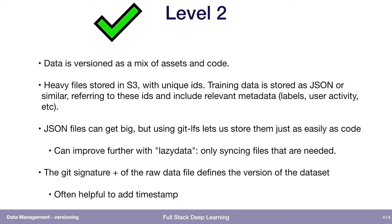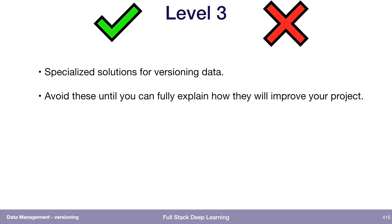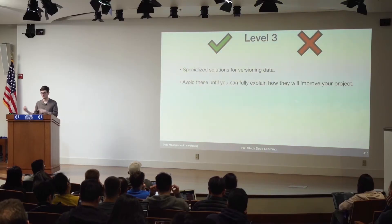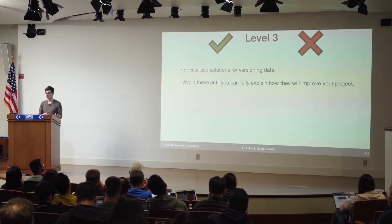Additionally, maybe we want to add a timestamp to this so that it's more visible what the version actually correlates to. Level three is specialized solutions for versioning data. I put both a check mark and an X here, because I think you should avoid these until you know what the problem you have is, and can explain to yourself how using this tool will solve the problem.